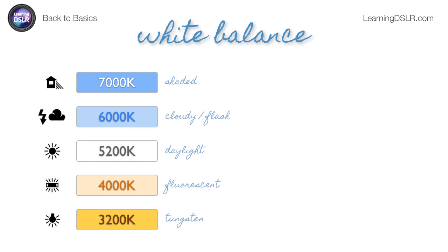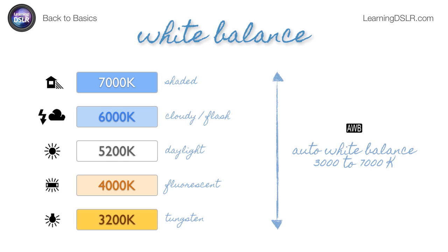Luckily, your camera comes with presets that match the most popular lighting situations. For Canon, these are illustrated with icons, and each is pegged to actual Kelvin values. For example, daylight is set to 5200K, and auto white balance tends to vary within a range of about 3000 to 7000K. With your camera settings you can pin it to one of these presets, which is sometimes the right move if you're getting a strange image on your LCD — it gives you consistency across your shots.